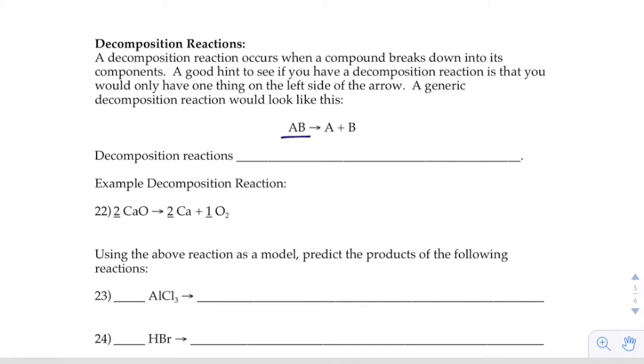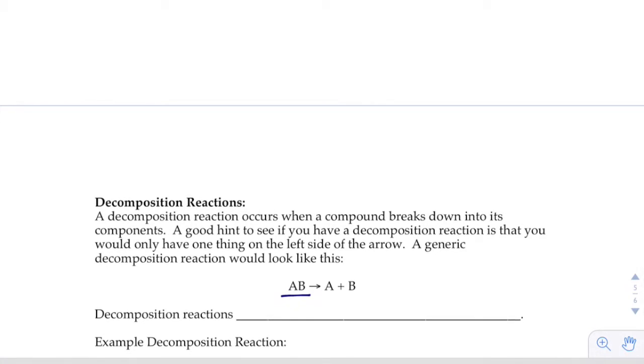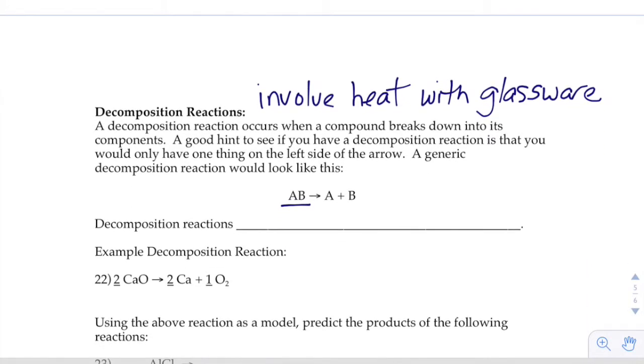So, decomposition reactions, you'll probably want to write this up here at the top. The decomposition reactions usually involve heat. The heat loosens up the compounds and makes those bonds break down. But in this case, there's glassware involved. So, you'll use a Bunsen burner or a hot plate or something, but it'll be in a beaker or in a test tube, something like that. And the heat causes the compound to decompose and break down into its component.